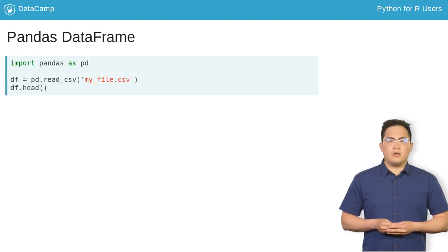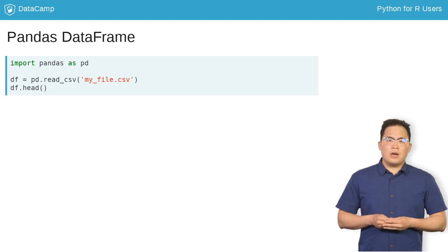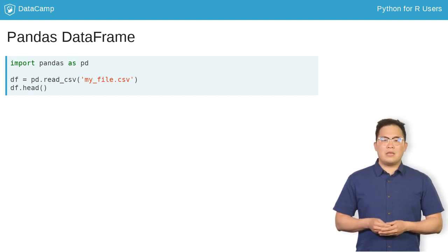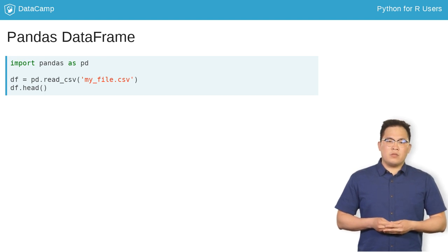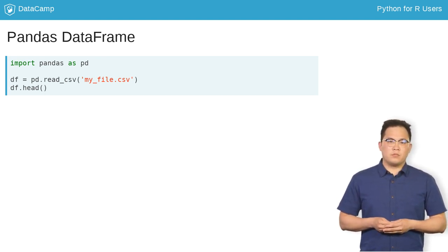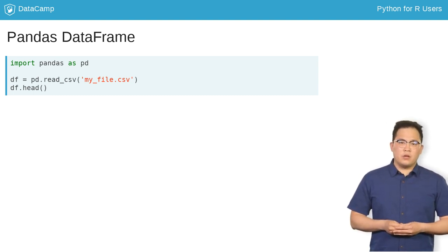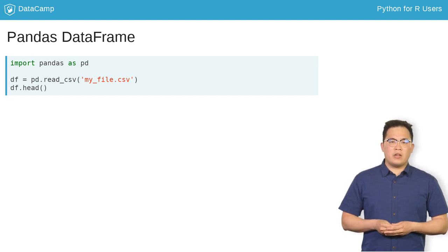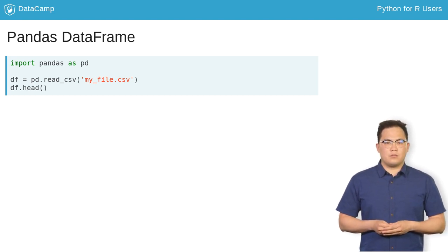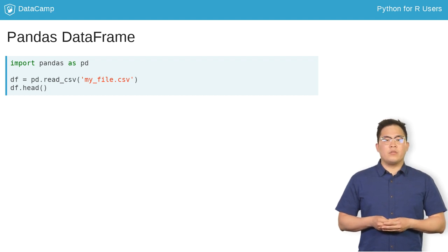The pandas library gives you the data frame object. A common alias for pandas is pd. You can use the read.csv function from pandas to import a CSV file. The result df is now a pandas data frame object, which has several methods and attributes associated with it. For example, you can use the head method to view the first five rows.